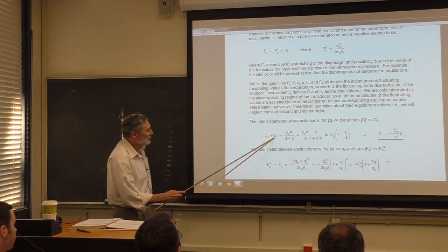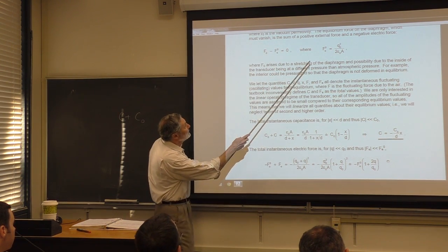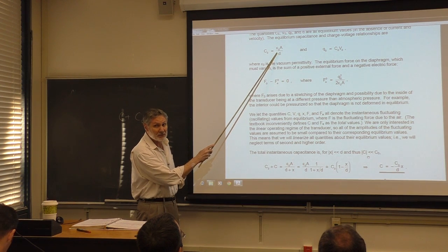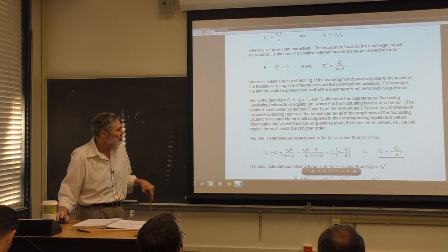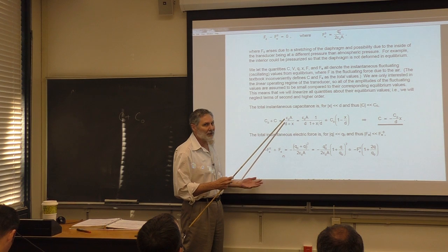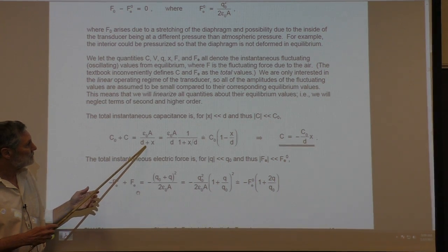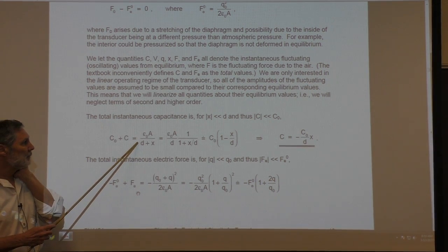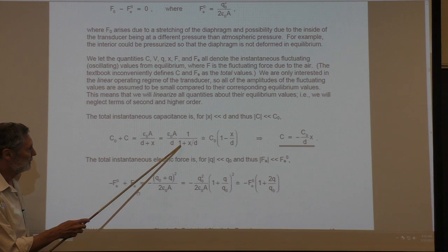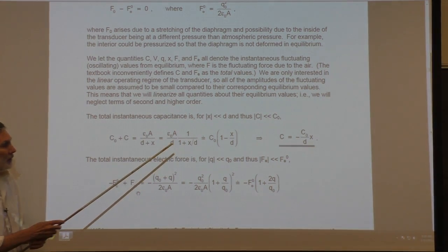The total instantaneous capacitance is C₀/(1 + x/D). We factor out D to go dimensionless: C = (ε₀A/D) · 1/(1 + x/D). Since we're interested in linear transduction, we need to linearize this. Using the Taylor expansion, 1/(1 + small quantity) ≈ 1 − (small quantity).